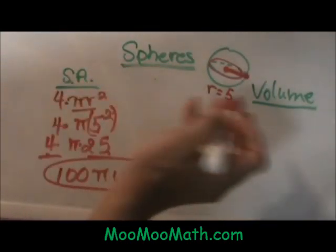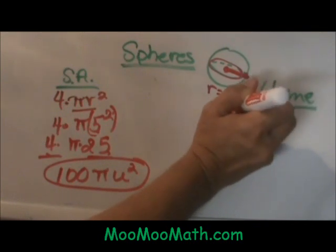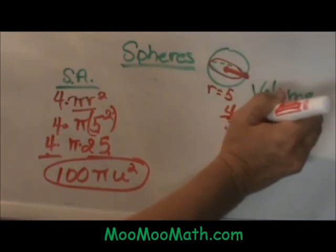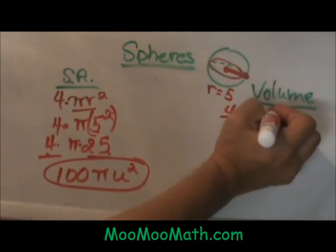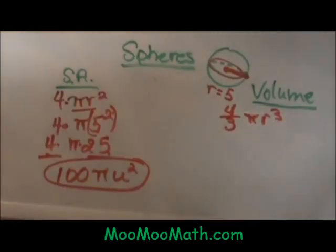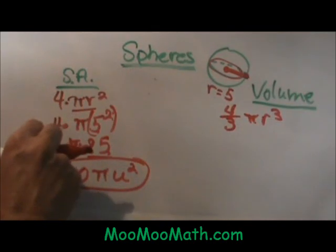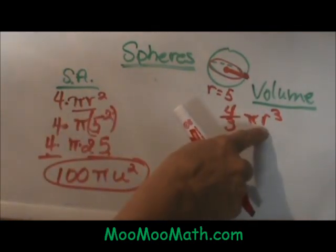Volume is actually a similar formula. It is 4 thirds pi r but it is in three dimensions so we are going to cube that, so pi r cubed. So all I need for this formula is the radius again.